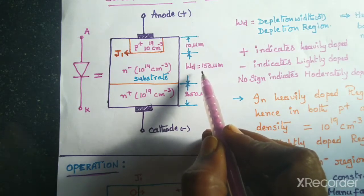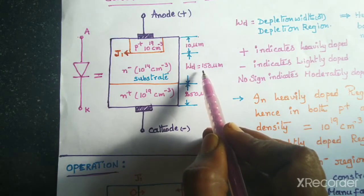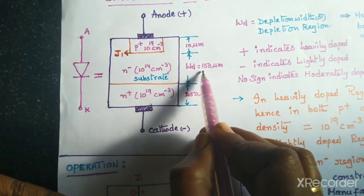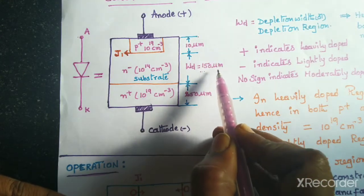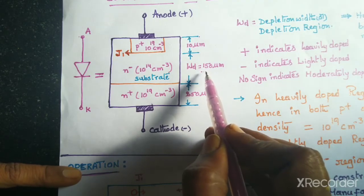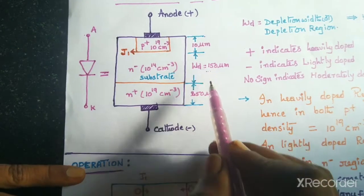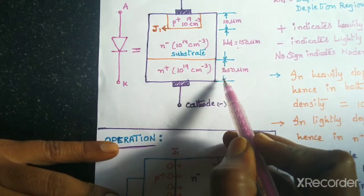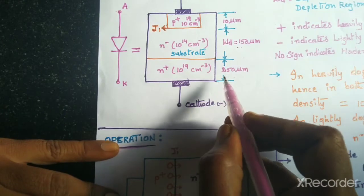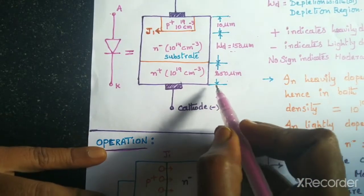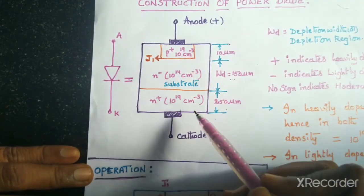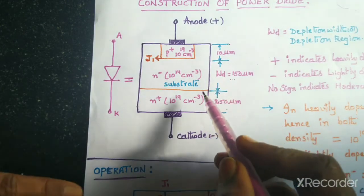If we need more voltage capability or voltage capacity, then we need to increase the depletion width. So WD equal to 150 micrometers is not constant — we may vary this based upon our requirement of voltage capability. The N plus region width can be increased up to 250 micrometers. The reason we have divided into three layers is to increase the voltage capability.